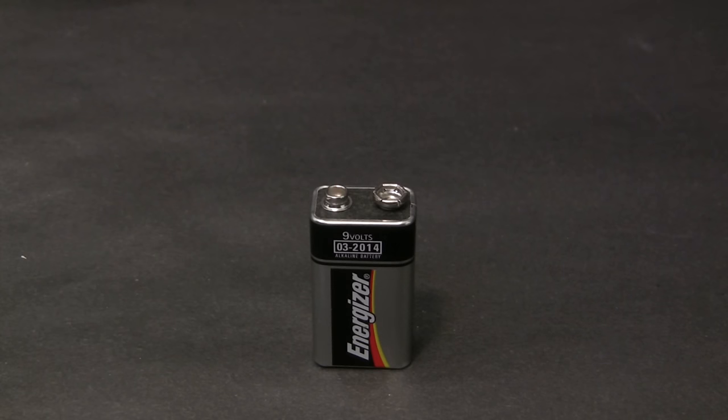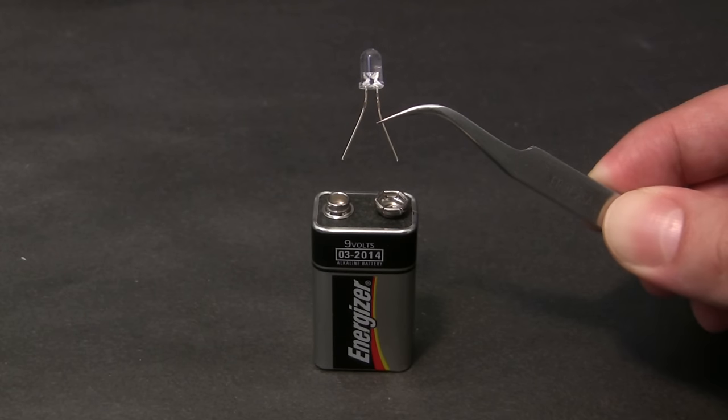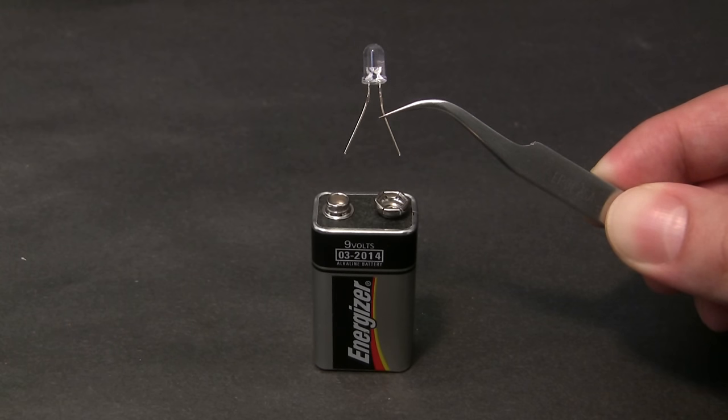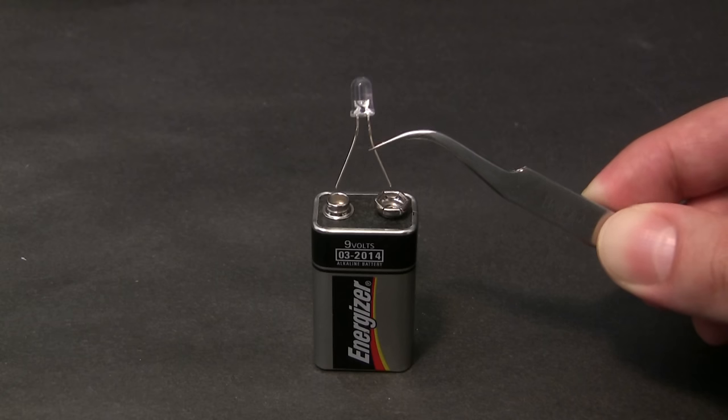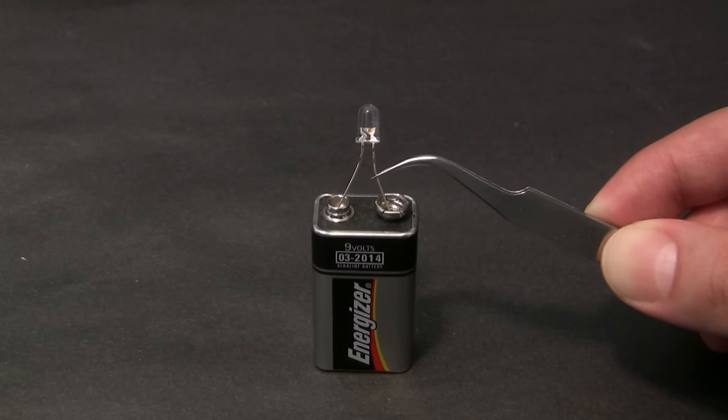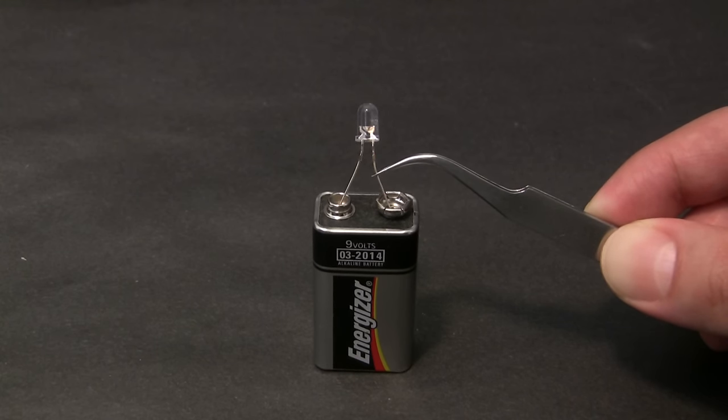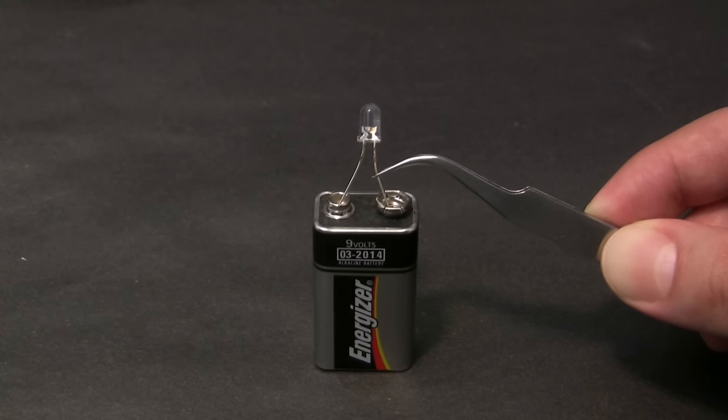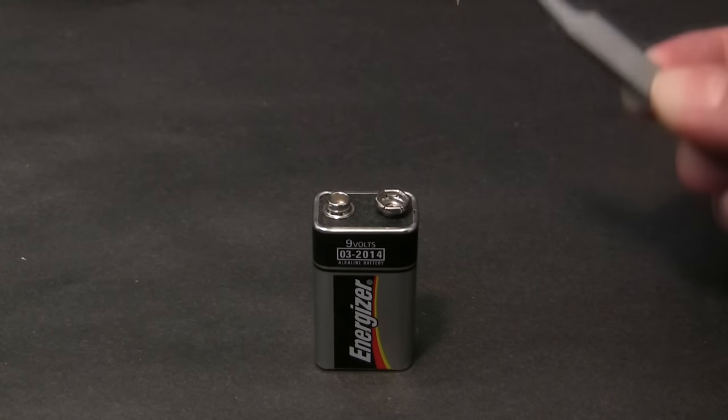This battery has electrical potential energy. It's not doing anything right now, but it does have the potential to do work. There's a chemical reaction inside it that creates electrical potential energy. And if I connect this light to this battery, we form a complete electrical circuit. Current will flow, and... hmm, a little too much current flowed. I guess we need to learn a little more about electricity before we try that again.